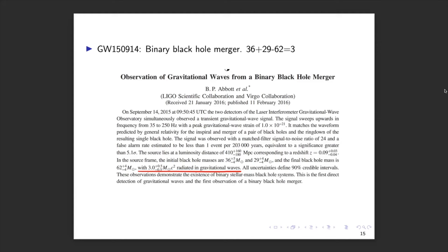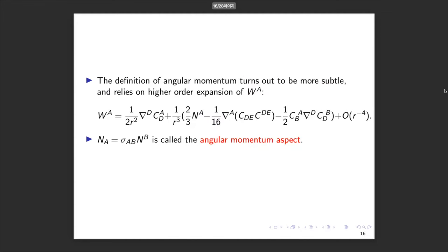But remember, we're interested in angular momentum. In the video, two black holes rotate about each other — there must be some initial angular momentum — and they merge into a single rotating black hole. What is the angular momentum flux? And can we talk about supertranslation invariance?